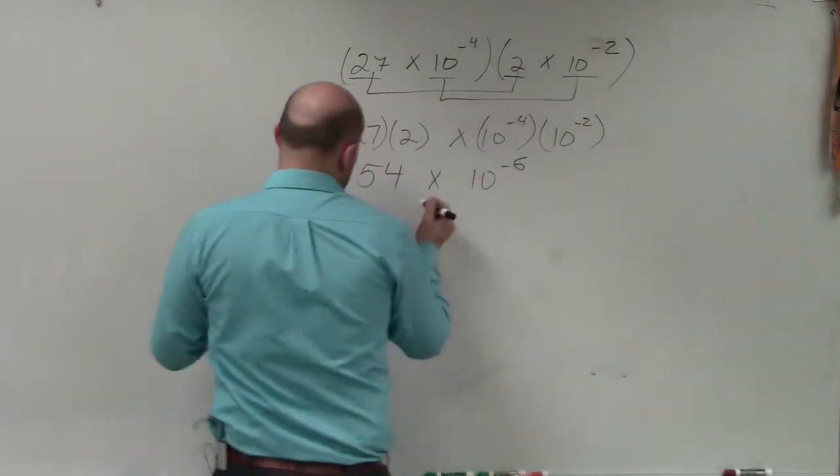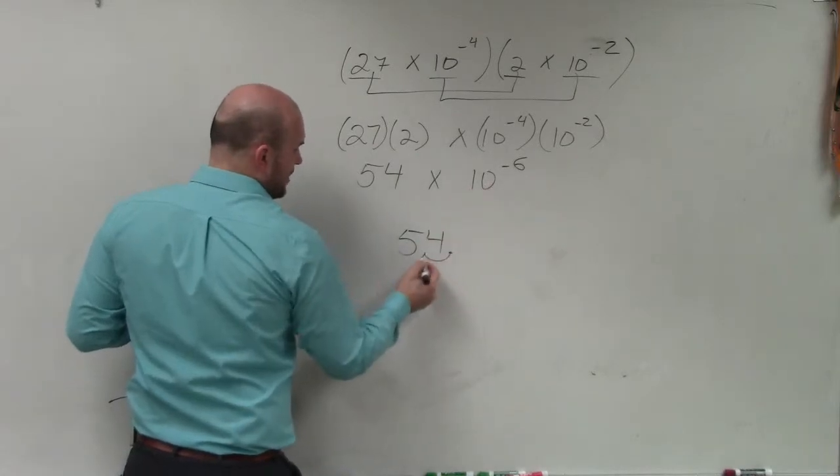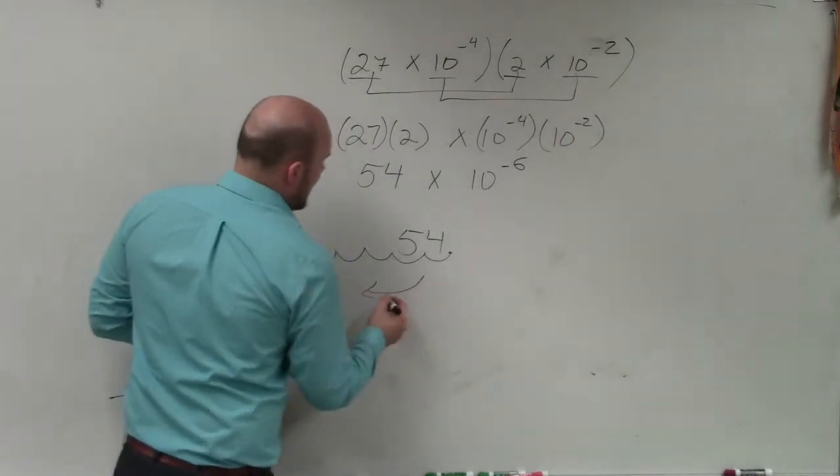If I was going to write this out, the decimal point is right here, and I'd go 6 to the left: 1, 2, 3, 4, 5, 6. Moving it that way.